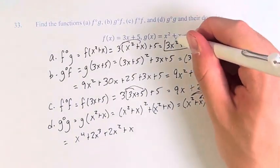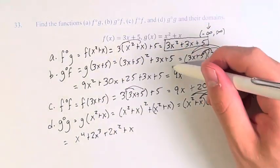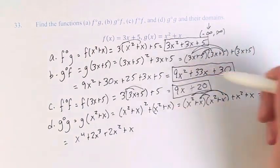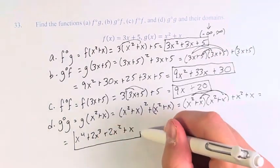So, based off of our original functions, we have f of g, g of f, f of f, and g of g.